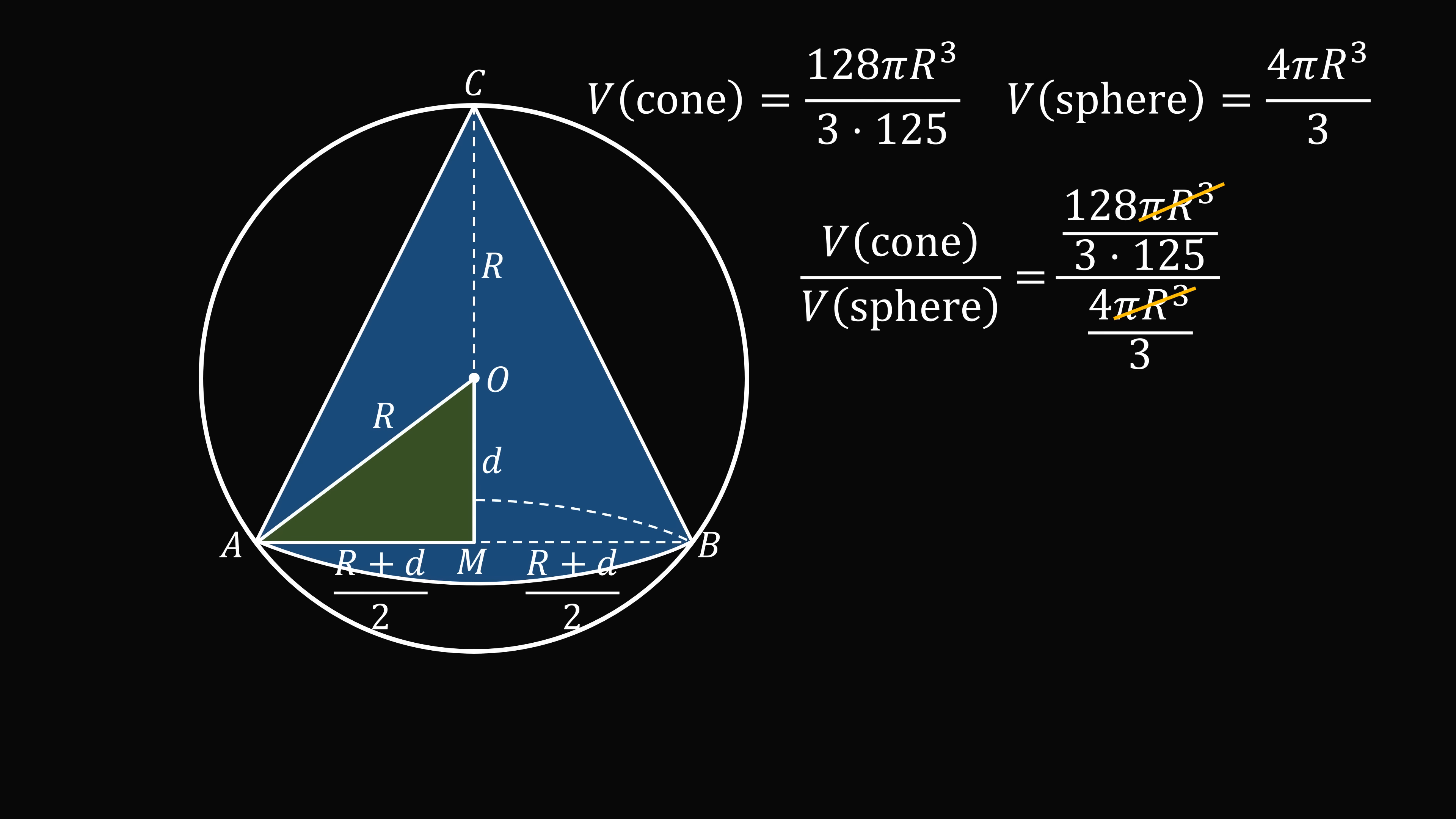The pi R cubed terms cancel out. The 3s and the denominators cancel out. So this is equal to 128 divided by 125 all over 4, and that simplifies to be 32 divided by 125 which equals 0.256.